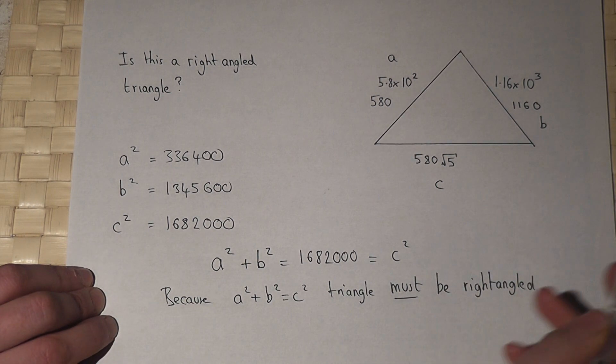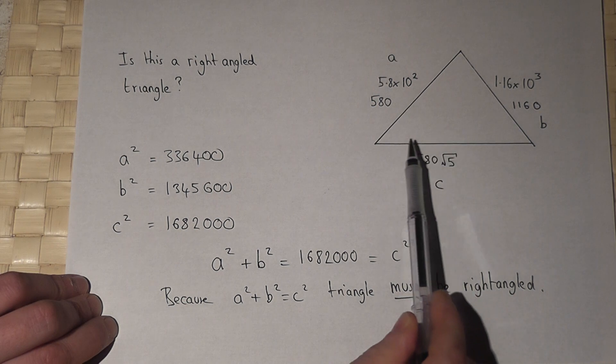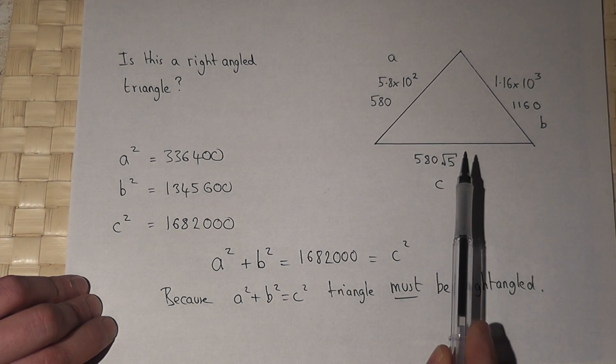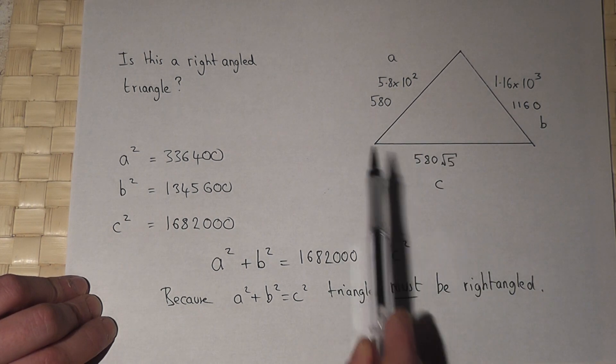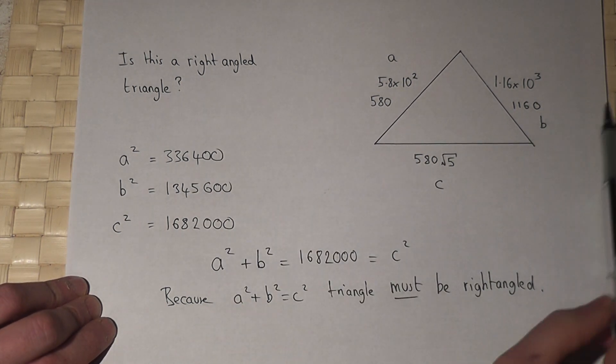Just as a minor point, I knew to choose that side there as c, because it was the longest side of the three, and so therefore had to be the hypotenuse if it was right-angled.